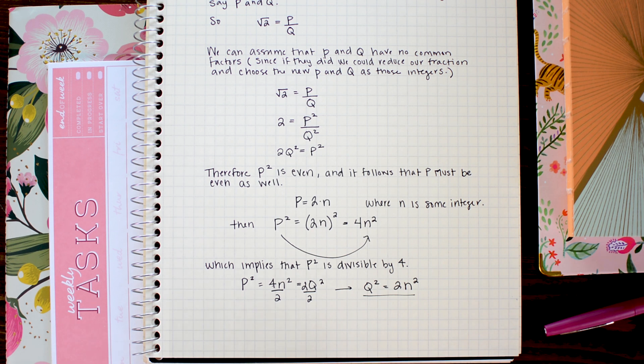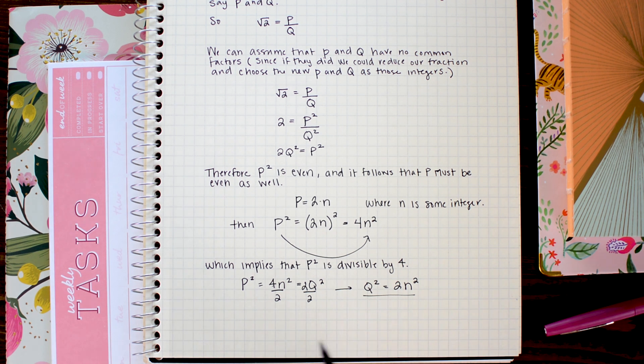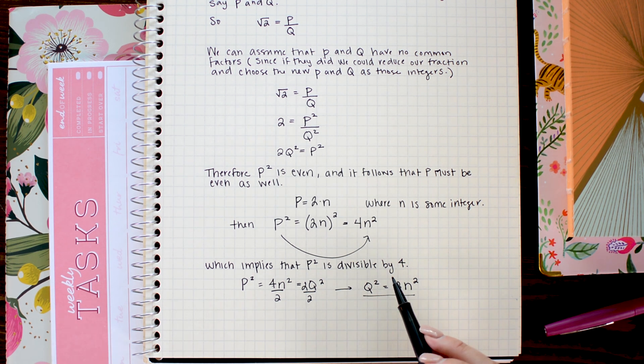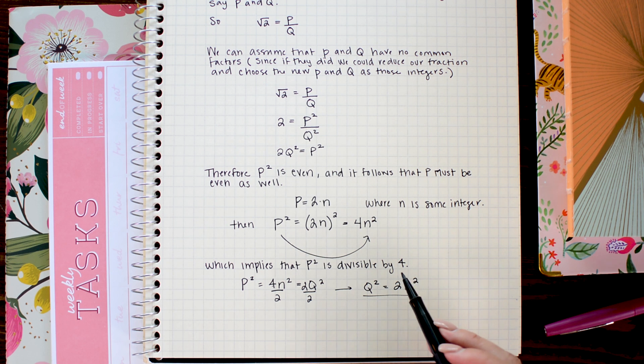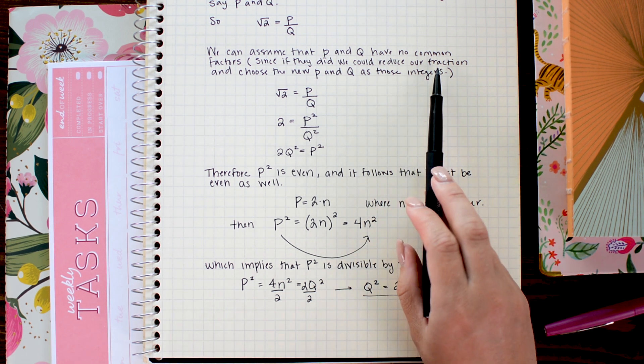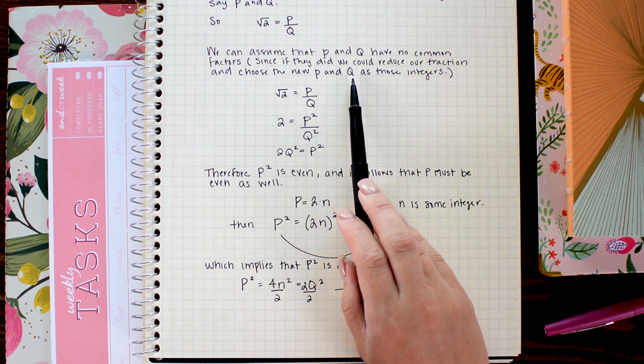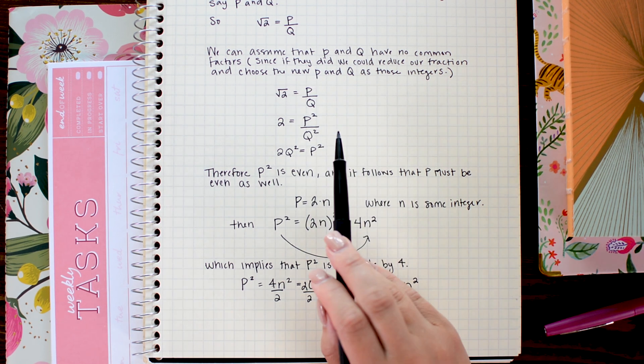So we have now said that q squared is equal to 2n squared. And because it has a 2 as its factor, q squared is also even, which means that q is even, which means that both p and q are even, which means that they have a common factor of 2 at minimum. And we said in our assumption that they didn't have any common factors, because we can choose the most reduced form of p and q. So that's our self-contradiction.